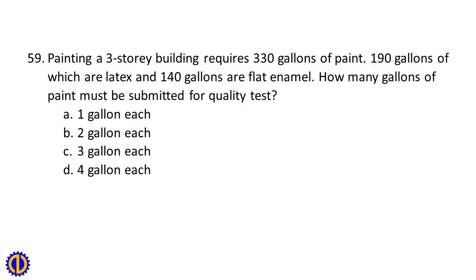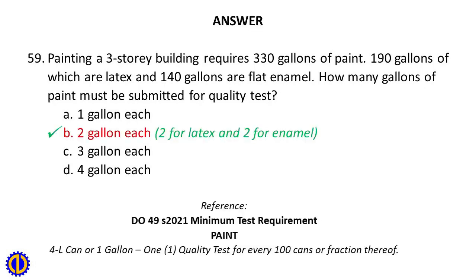Question 59: Painting a three-story building requires 330 gallons of paint — 190 gallons of latex and 140 gallons of flat enamel. How many gallons of paint must be submitted for quality test? A. One gallon each, B. Two gallons each, C. Three gallons each, D. Four gallons each. Answer: B. Two gallons each — two for latex and two for enamel. Reference: DO49S 2021 Minimum Test Requirement, Paint — one quality test for every 100 cans or fraction thereof.